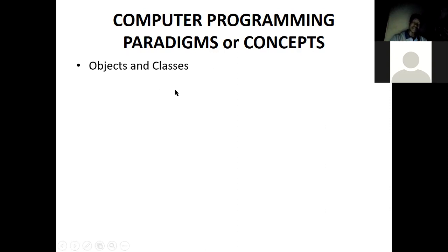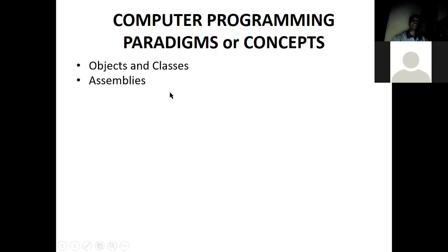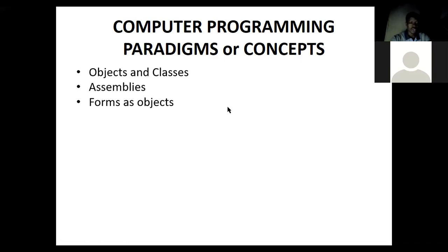In object-oriented programming, you program as if you are dealing with objects. You have objects and you have classes. You can think of assemblies, which are made up of a whole lot of objects. Then you have forms as objects — forms are the interface of a program. I'm going to open my calculator application to show you a typical form. I'm talking about interface design right now.